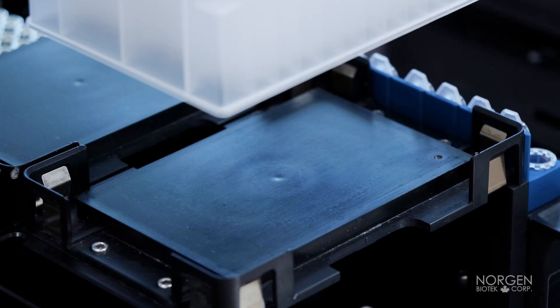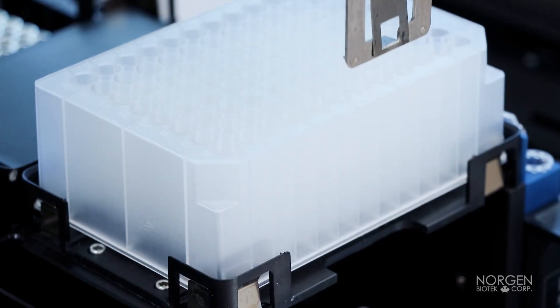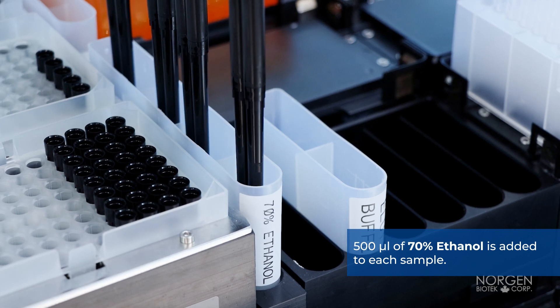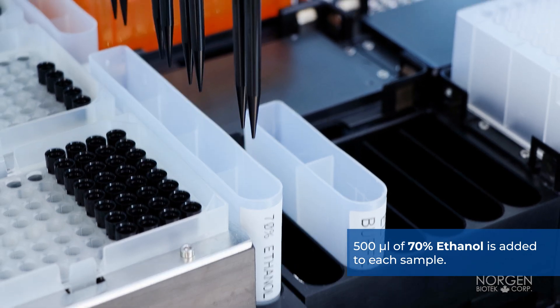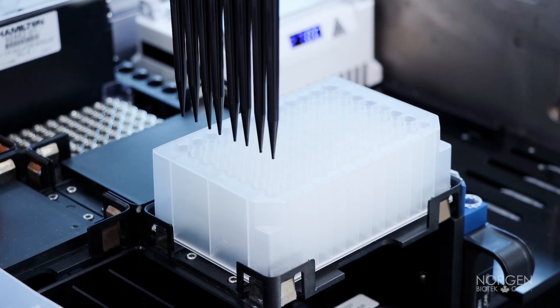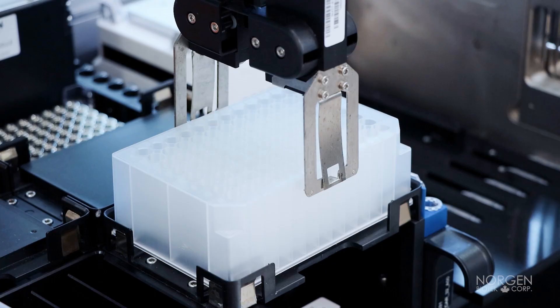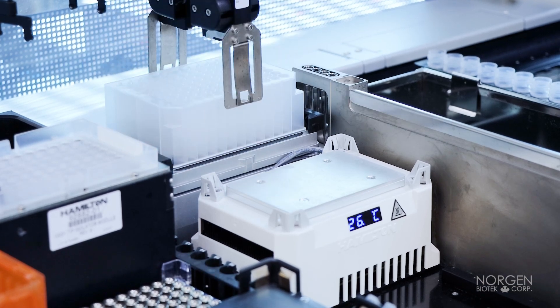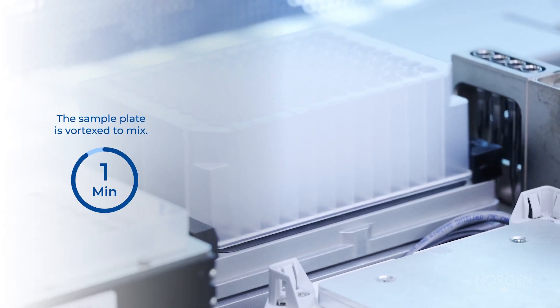The sample plate is then transferred back to the original position, and 500 microliters of 70% ethanol is added to each sample. The sample plate is transferred to the heater shaker and vortexed to mix for one minute.